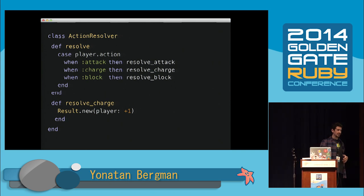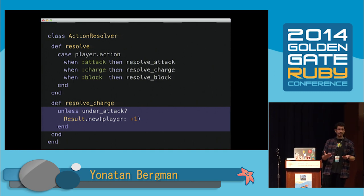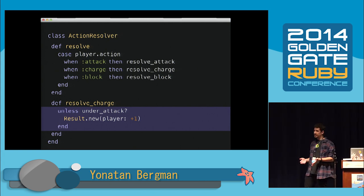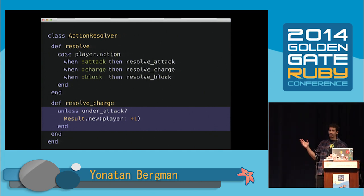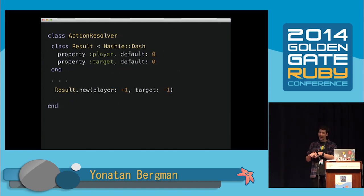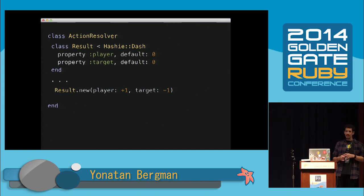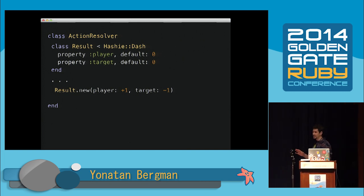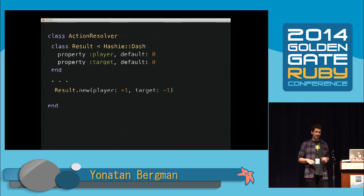The code for the Action Resolver was written in a way that enabled me to easily play around and change the rules. It was really important that the interactions between the different actions were both easy to read and easy to change. I had a sort of DSL written out to show how each action resolves. One of the first rule changes was that if you're trying to charge and someone is attacking you, your charge is disabled and you don't get the point. The change was only one line of code and didn't affect readability at all.